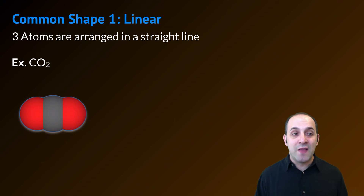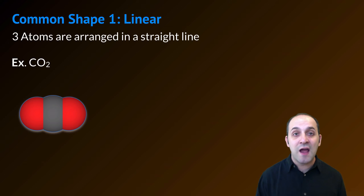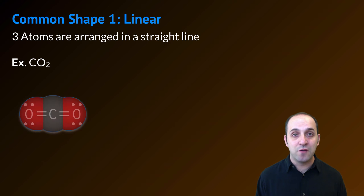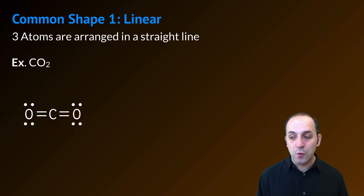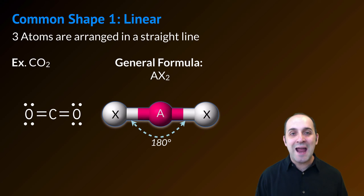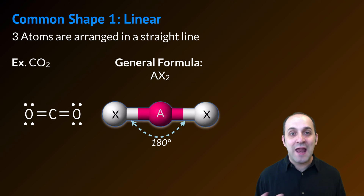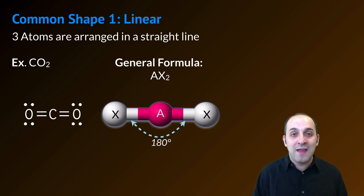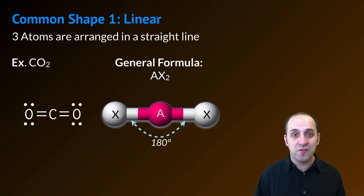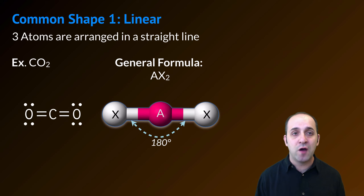Our first common shape is the linear shape — just three atoms arranged in a straight line. Carbon dioxide is a good example of this. Here's carbon dioxide's Lewis structure. The general formula for a linear molecule would be AX2, where X is any atom that A, the central atom, is bonded to. Since this is a straight line, the angle between these bonds is going to be 180 degrees. Does this make sense? If it doesn't, write down any questions you have before we move on.